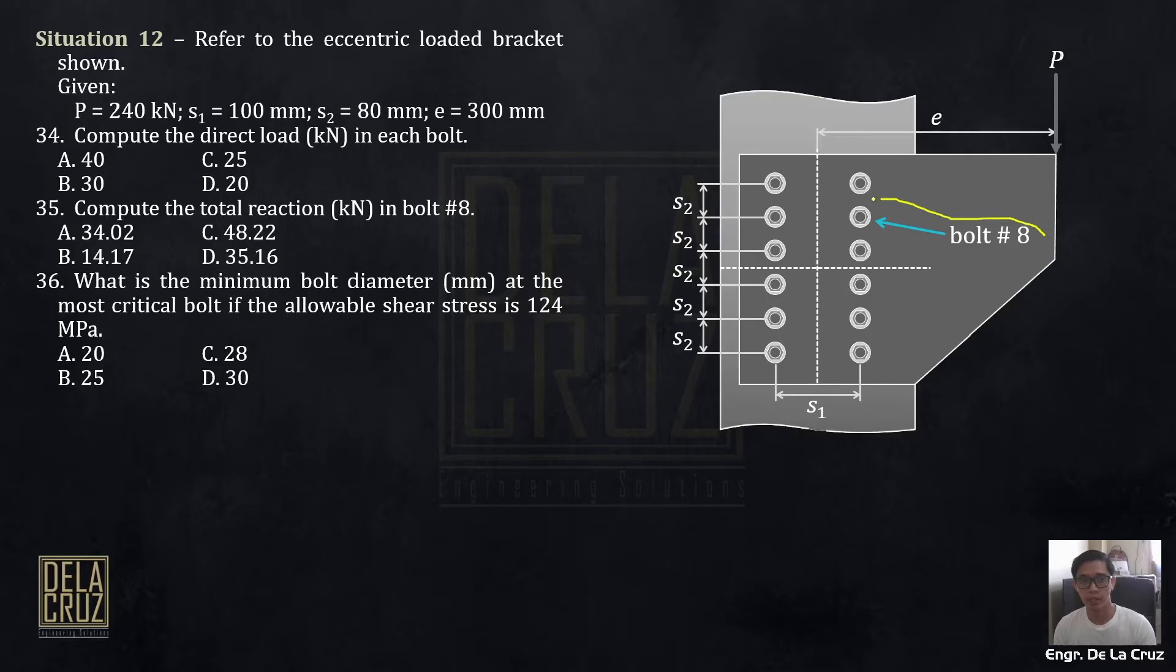Alright, so first question, compute the direct load in each bolt. And compute the total reaction in bolt number 8. And what is the minimum bolt diameter at the most critical bolt if the allowable shear stress is 124 MPa?